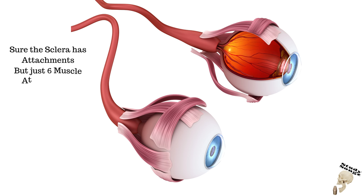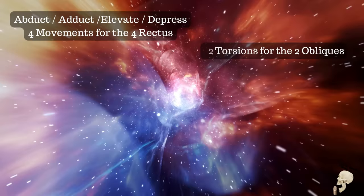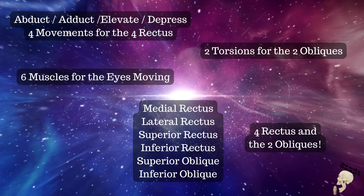Inferior oblique: elevation and extorsion, also helps with abduction. Sure the sclera has attachments, but just six muscle attachments. I love the eye muscle anatomy. Adduct, adduct, elevate, depress — four movements for the four rectus, two torsions for the two obliques. Six muscles for the eyes moving. Medial rectus, lateral rectus, superior rectus, superior oblique, inferior oblique. Four rectus to the two obliques.